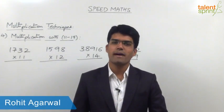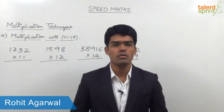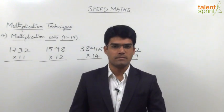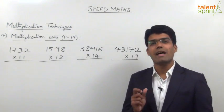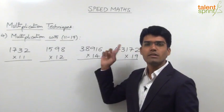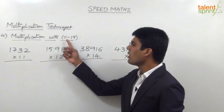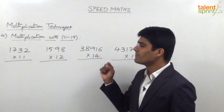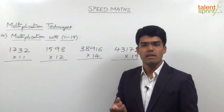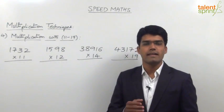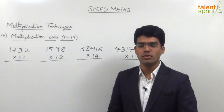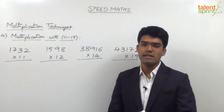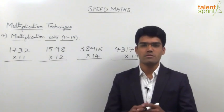After learning about multiplication with 5 and 25, let us now move on to the next multiplication technique which is useful for multiplying numbers with 11 to 19. Here we are going to learn how to multiply large numbers with anyone from 11 to 19. The advantage we have here is that in all these numbers from 11 to 19, the tens place is equal to 1.